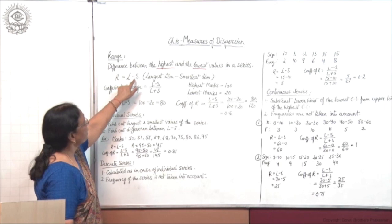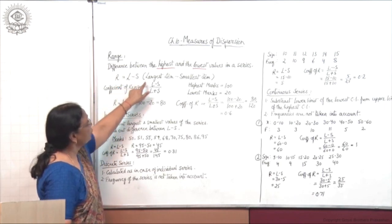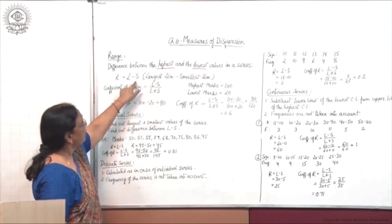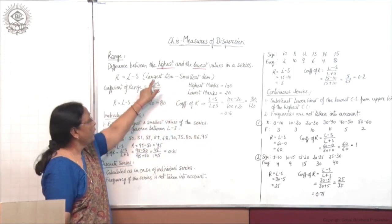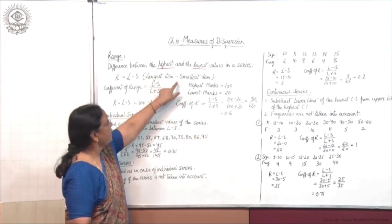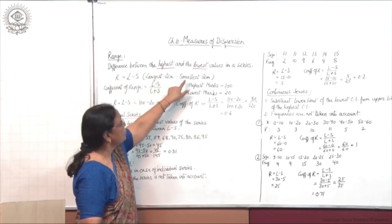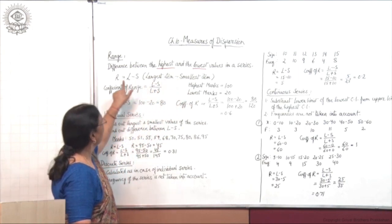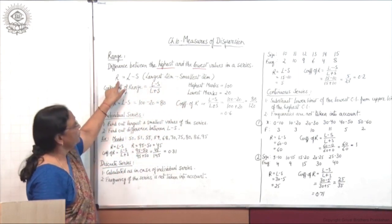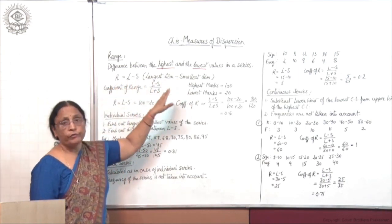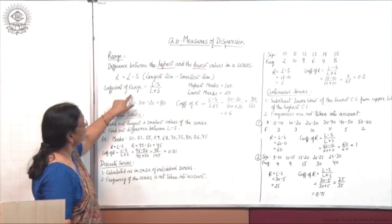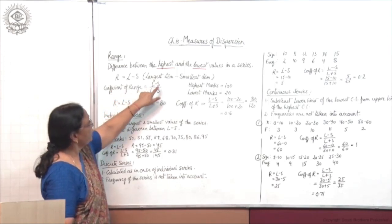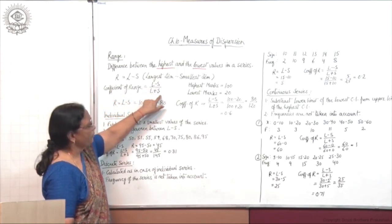Range is equal to L minus S, where L stands for the largest item and S is the smallest item. So L minus S gives you the range. The coefficient of range is L minus S upon L plus S. Calculation of range is very simple.